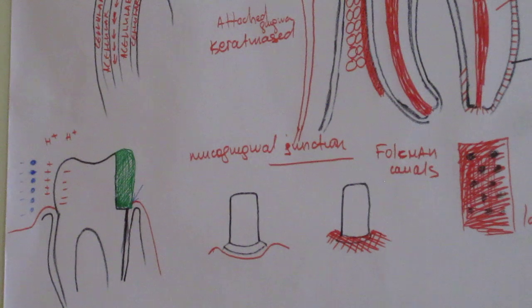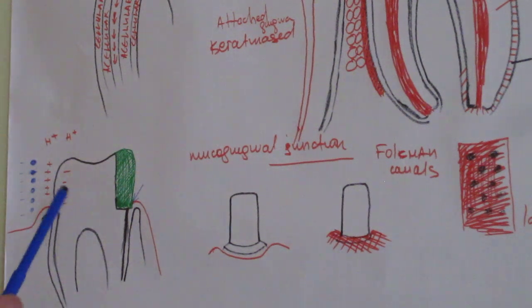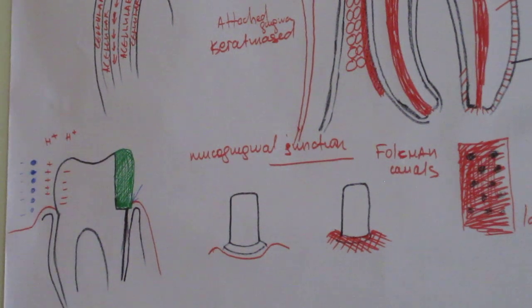The plaque bacteria are negatively charged. Also the tooth structure is negatively charged, the cementum also. So we have two negatively charged structures. One of them is the tooth and the other is these bacteria. So how do they connect then? It's electrostatic forces and Van der Waals connections.